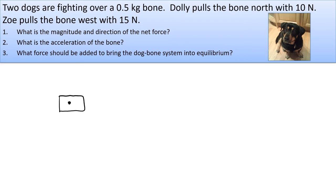Then I draw the forces concurrent with each other, meaning they start on the same spot — that dot. Dolly pulls north, so this is 10 newtons — I try to draw them somewhat to scale. This is the force that Dolly exerts, F sub D equals 10 newtons, pointing north. This is like an overhead view. And Zoe pulls west with 15 newtons.